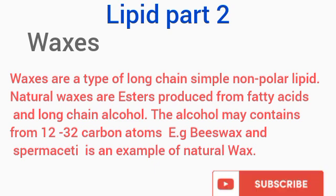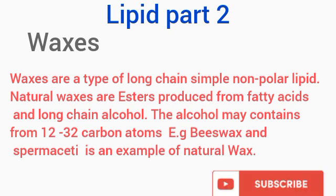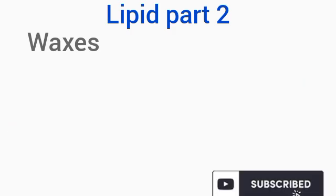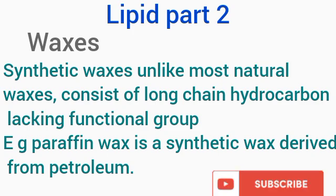The second topic we are going to talk about is wax. Wax are types of long-chain non-polar lipids. There are two types: natural wax and synthetic wax. Natural wax are esters produced from fatty acids and long-chain alcohols. The alcohol comprises from 12 to 32 carbon atoms. An example of natural wax is beeswax. The synthetic wax, unlike the natural wax, comprises long-chain hydrocarbons lacking a functional group. Example of the synthetic wax is paraffin wax, which is produced from petroleum.